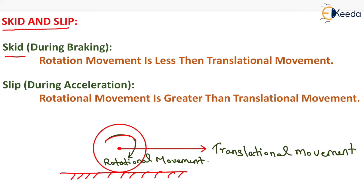Slip occurs when the rotational movement of the wheel is greater than the translational movement of the wheel, and it generally takes place during acceleration. For example, if you press the clutch and accelerate, the rotational movement of the wheel keeps increasing but there is no translational movement; then when you suddenly release the clutch, slip takes place. So slip happens when rotational movement is greater than translational movement, generally during acceleration.